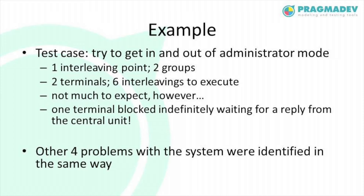Deploying this scenario, we have one terminal and one central unit running on different nodes. When the user enters the key and code, this information is sent to the central unit — at this point we have a critical point because of the distributed interaction between components. The algorithm identifies one interleaving point, meaning two groups of instructions. With two terminals, the simplest scenario, we have a total of six interleavings.